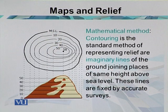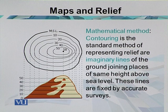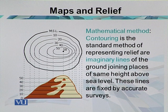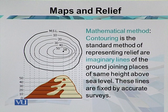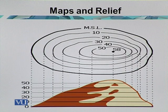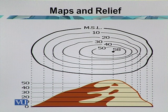In the mathematical method, contours are very important. Contouring is the standard method of representing relief. Contours are imaginary lines on the ground joining places of the same height above sea level. These lines are fixed by accurate surveys. All the lines that appear as circles on a map are called contours.